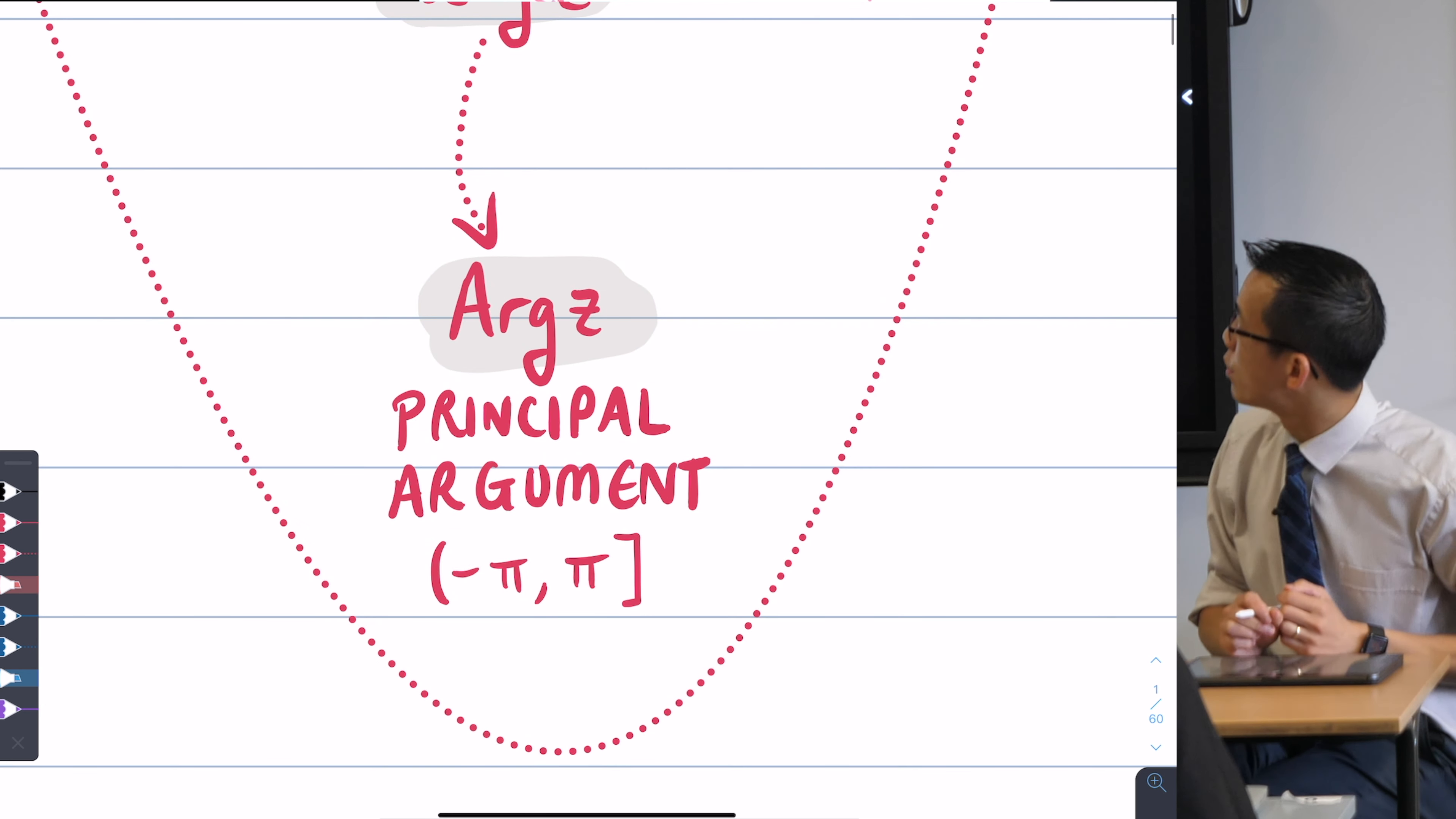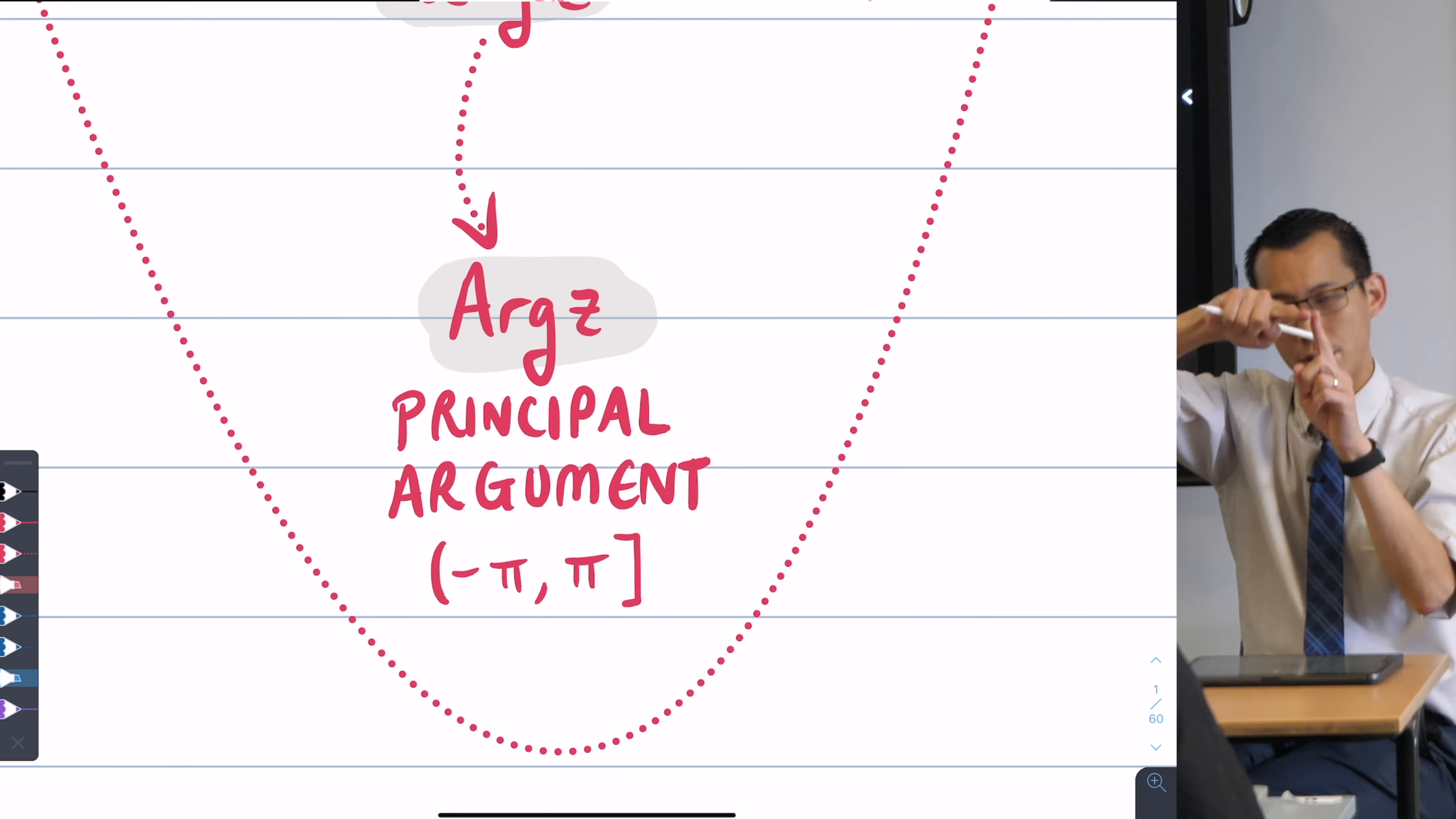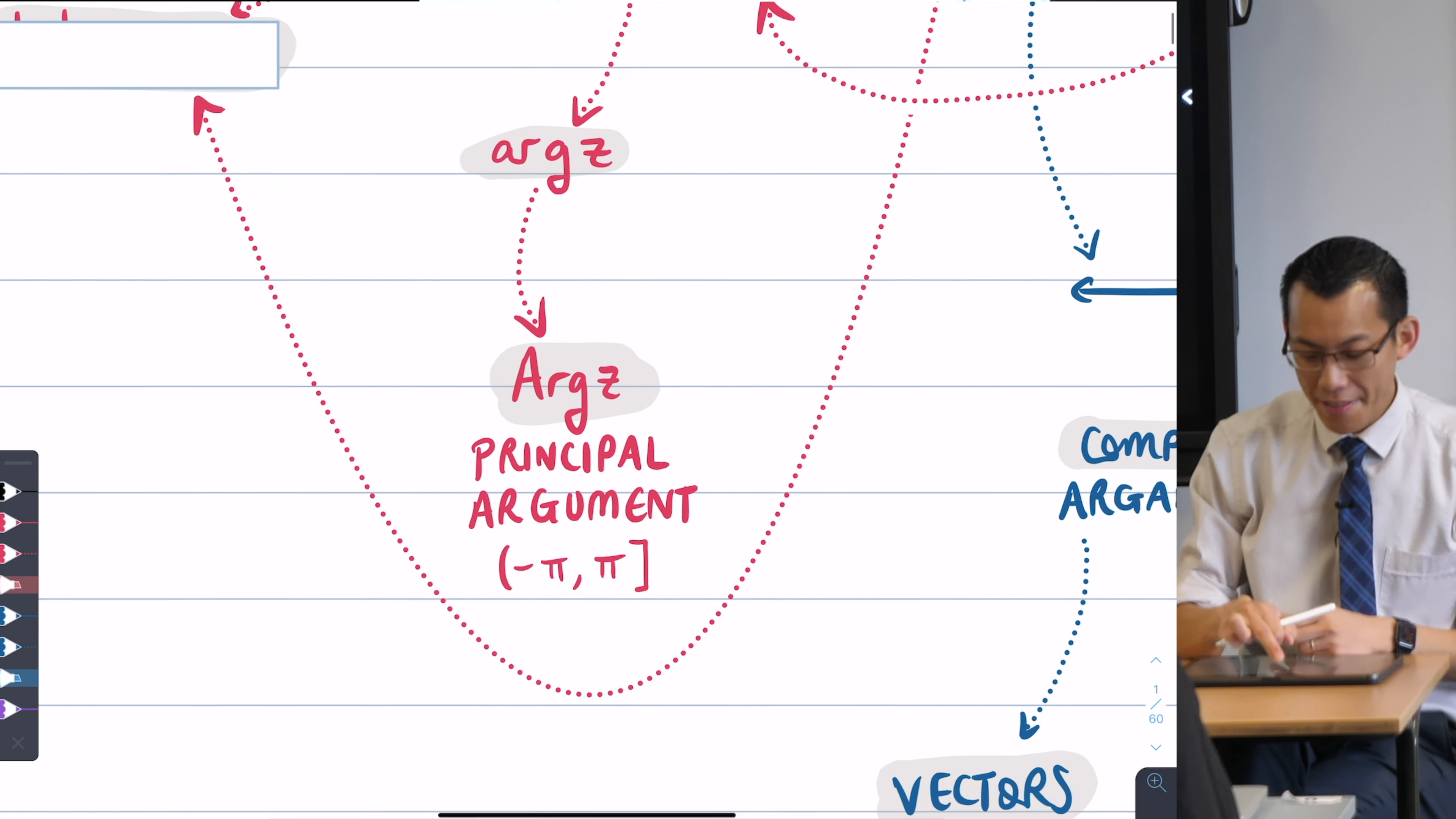So we introduced this idea of the principal argument. Do you remember that? And I've used interval notation here just to remind you of it because it's from earlier in the year. We said you can go from negative pi to pi. We don't include negative pi because negative pi goes, oops sorry, negative pi goes this way, pi goes this way. You end up on the same spot. So it's like, we better work out which one we want. We decided the positive one was better, right? That's the argument.